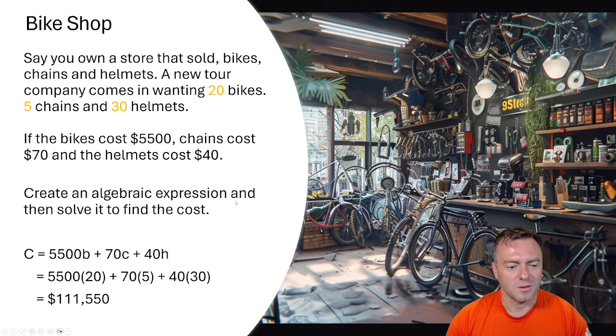And then lastly you solve it and you got 111,550. That's a pretty good example of substituting in. So we've made our own equation. This is the store's equation for when they're selling equipment. And then this is what the customer has wanted. So this was the unknown. The tour guide was coming in and he didn't know exactly what they wanted. And that's how you could solve it.